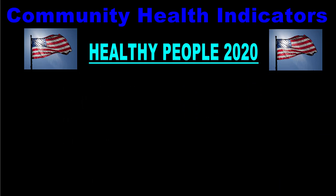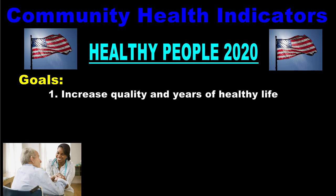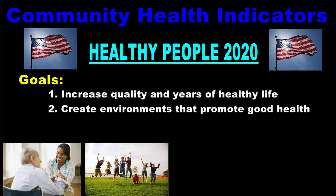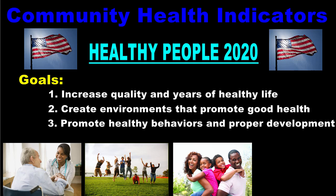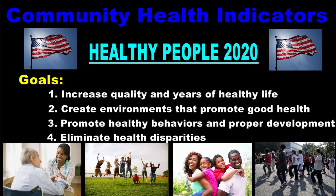Healthy People 2020 created this list of 12 indicators with four goals in mind. First, to increase the quality and years of healthy life for people living in the United States. Second, to create social and physical environments that promote good health. Third, to promote healthy behaviors and proper development across all life stages. And finally, to improve the health of all populations while eliminating health disparities or differences in health across different groups of people. This last goal is particularly important because we want people of all ages, races, ethnicities, and financial situations to be healthy, not just the young and socially elite. The 12 leading health indicators can be used to measure the extent to which these goals are being achieved over time.